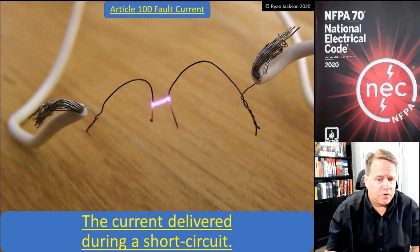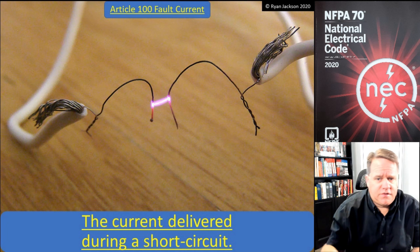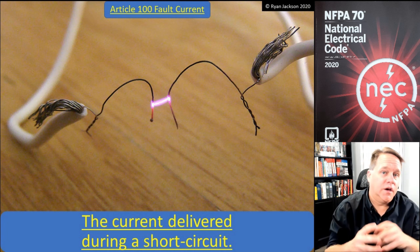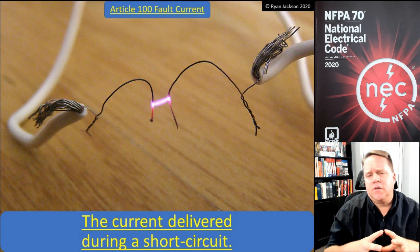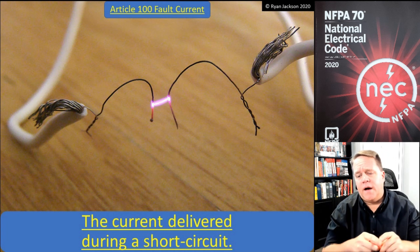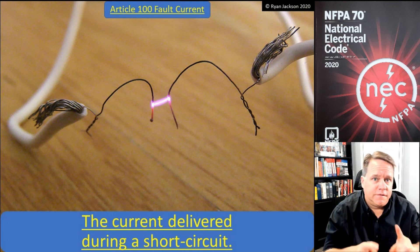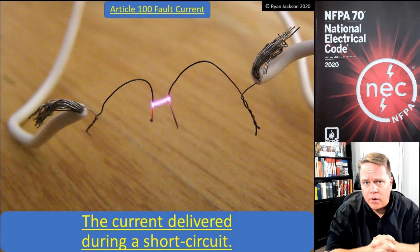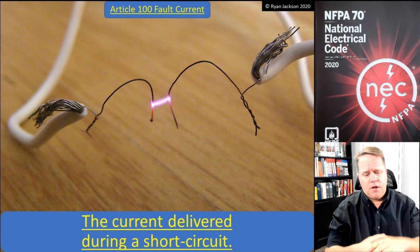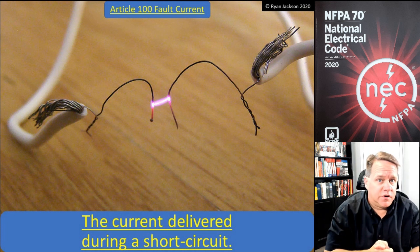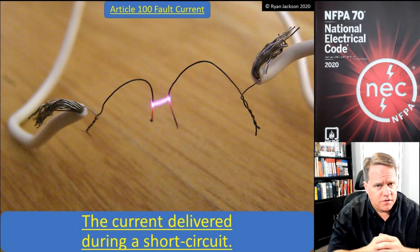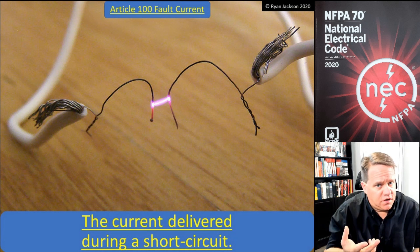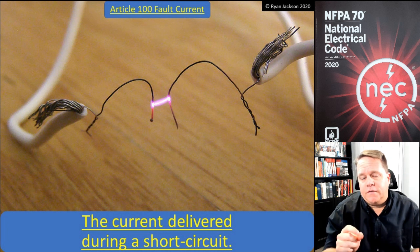Fault current is pretty simple — it's the amount of current that's delivered during a short circuit. The term short circuit is not defined, though it looks like it probably will be in the 2023 code. If I were to define a short circuit, I would include ground faults in my definition. So phase A and phase B smacking into each other, or line one and line two of a single-phase system — the black and red hitting each other — or a line-to-neutral fault like the orange wire hitting the gray wire. I would also consider a ground fault a type of short circuit: an ungrounded energized conductor hitting metal parts connected to an equipment ground. The fault current is the current that's delivered during such an event.